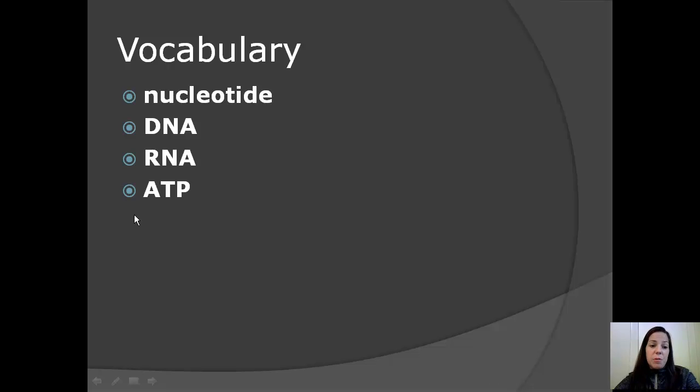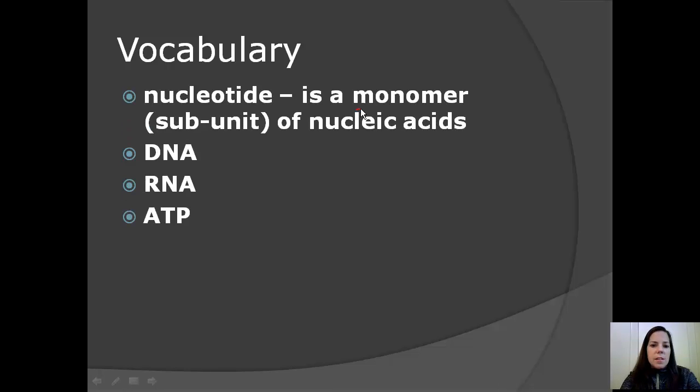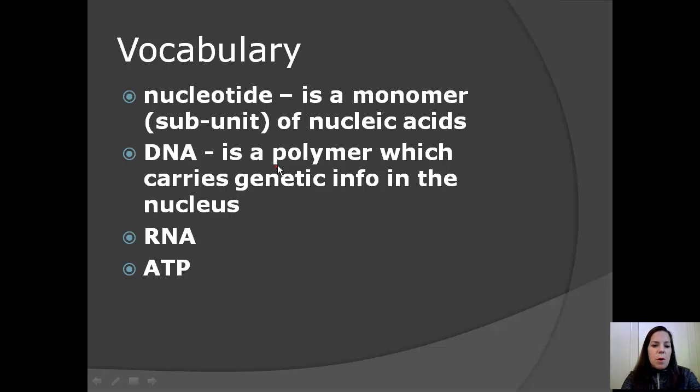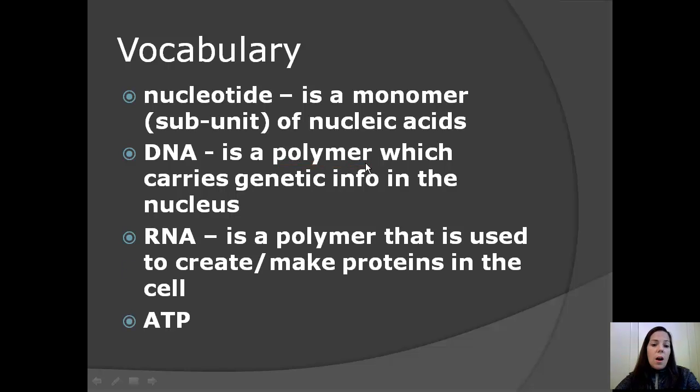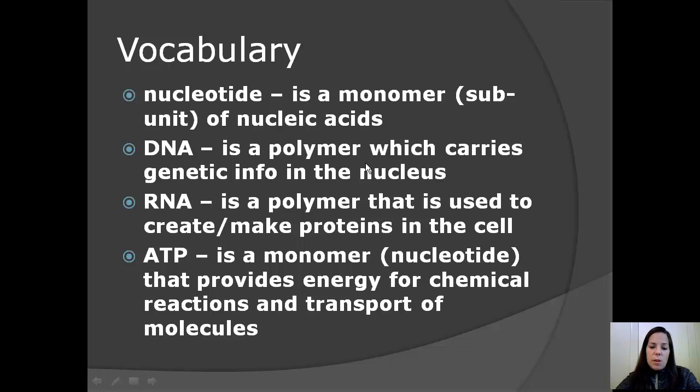The vocabulary that we're going to go over are key terms you need to be familiar with. Nucleotide is a monomer of nucleic acids, so a subunit or building block. DNA is a polymer which carries genetic info in the nucleus. RNA is a polymer that is used to make proteins in the cell. And finally, ATP is a monomer nucleotide that provides energy for chemical reactions and transport of molecules.